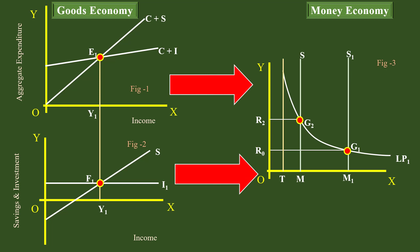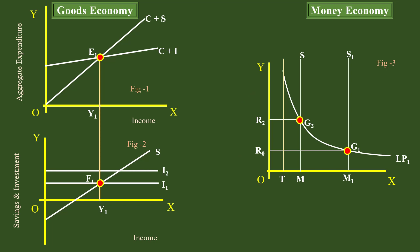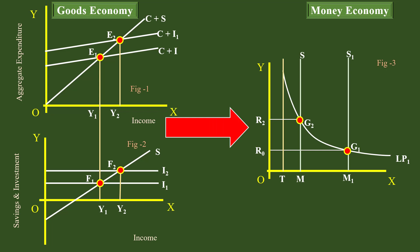Let us take these effects into account. After a fall in the interest rate, it is reflected in the goods economy. Due to a fall in the interest rate, the investing community undertakes fresh investments. The investment curve I1 is shifted upward. The new investment curve I2 cuts the savings curve S at F2, and the new equilibrium income is Y2. This in turn shifts the aggregate demand curve upward. The new aggregate demand curve C plus I1 cuts the aggregate supply curve at E2, and the equilibrium income is Y2.